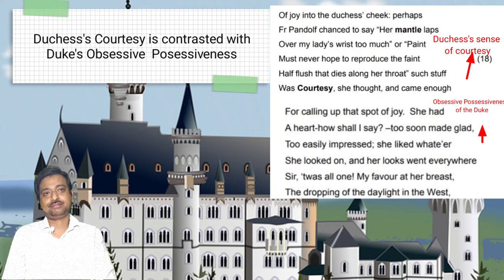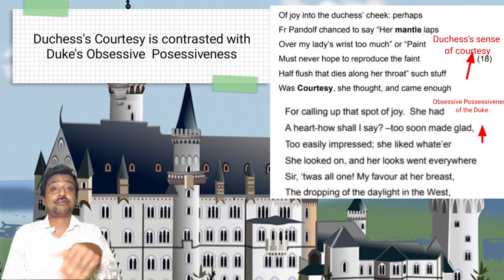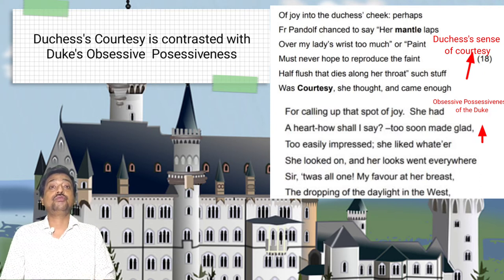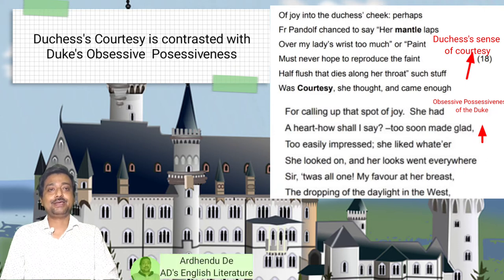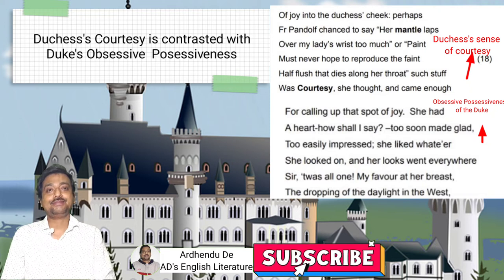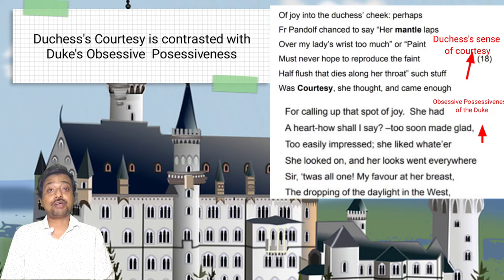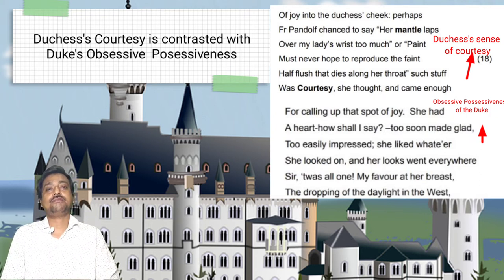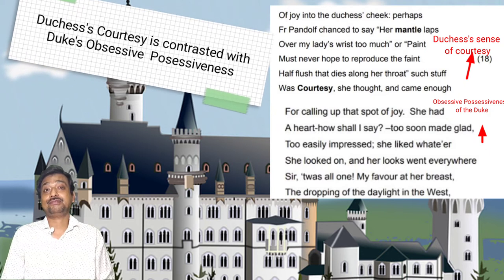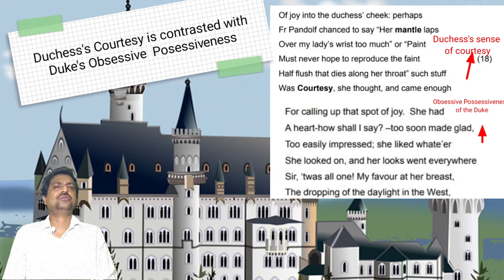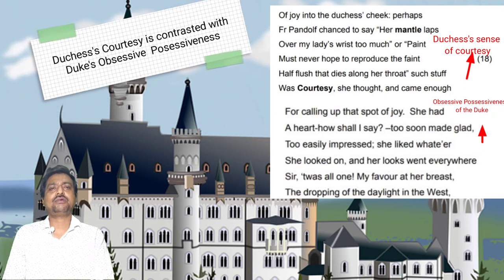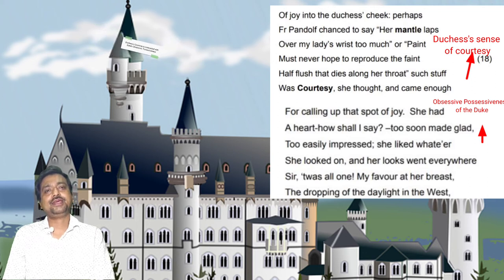He didn't like what he considered common courtesies would call up that spot of joy that she constantly appeared to have on her face. The duke accuses her of having 'too soon made glad' or being too easily impressed. That's a peculiar — a womanly heart that is full of joy and full of life. But the duke was irritated by the fact that she enjoyed everything she looked at. As 'My Last Duchess' progresses, this man appears to be more and more dominating. He seemed to have imprisoned his duchess because he was unable to manage her emotions — he wanted to be the only one who could make her happy or make her blush.